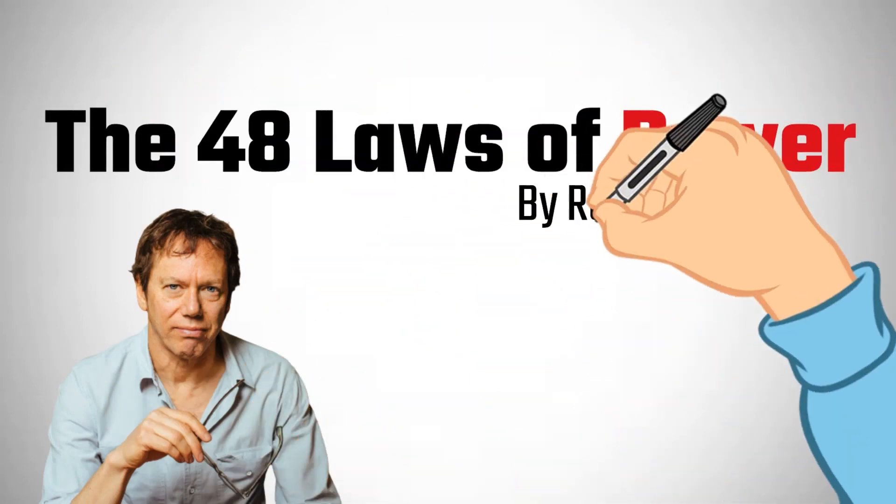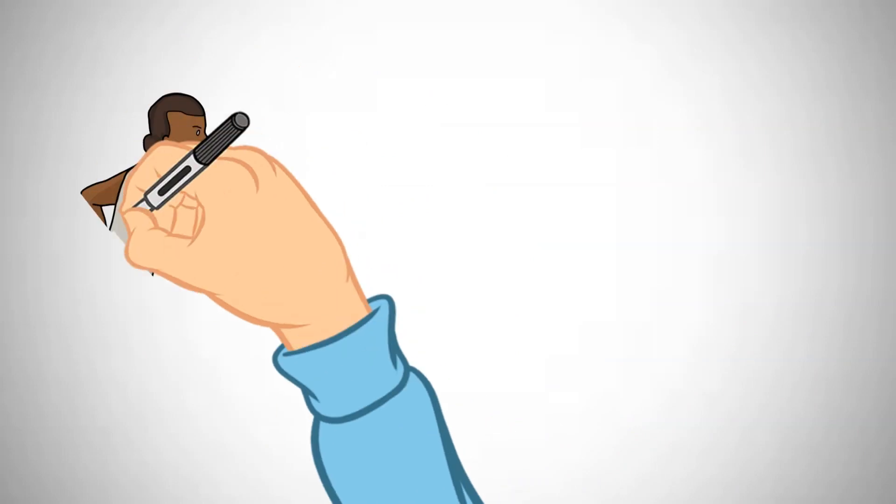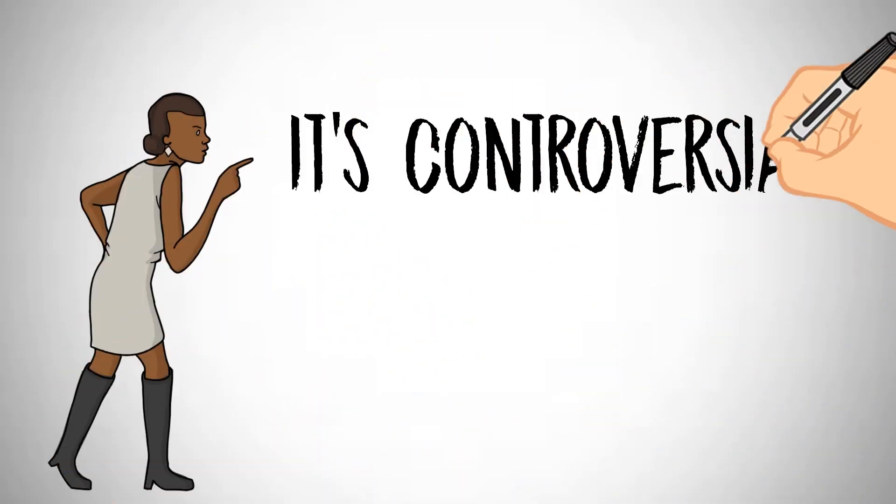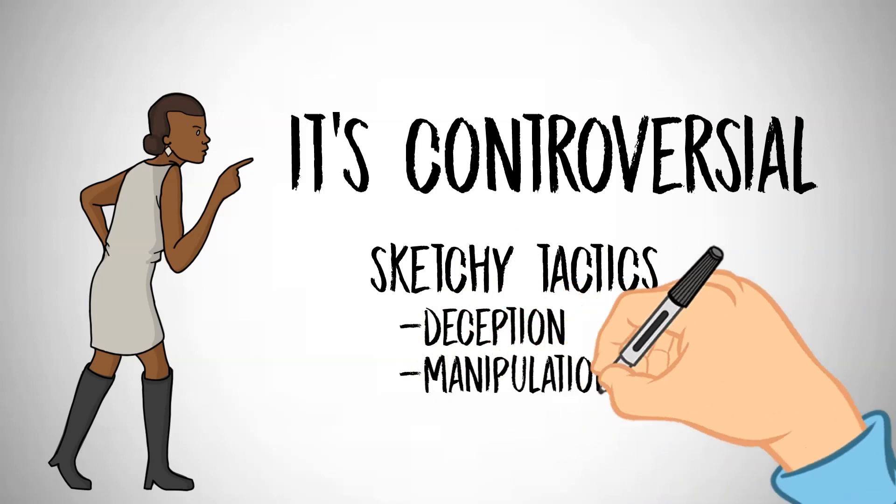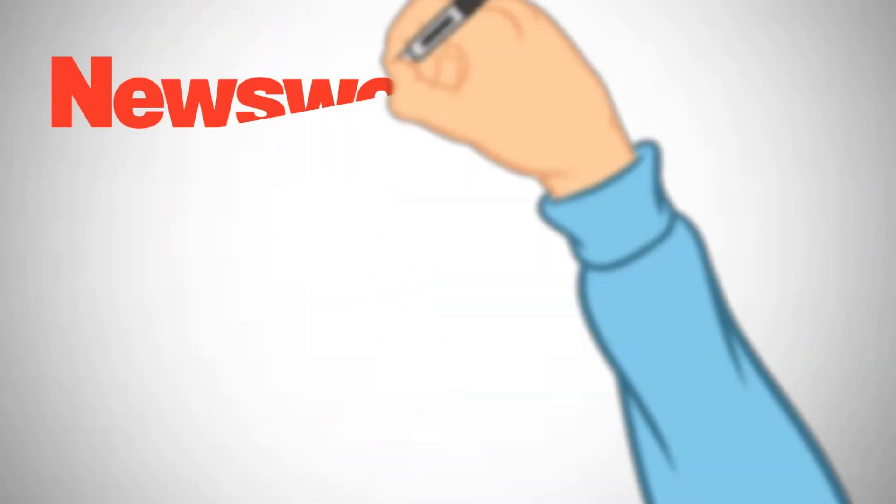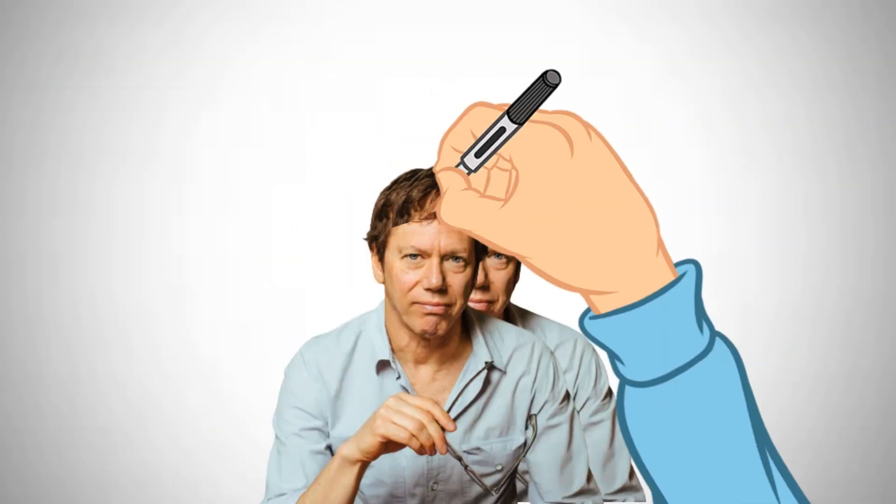So there's this book called The 48 Laws of Power by Robert Greene, and boy has it caused quite a stir. Some folks say it's controversial because it encourages sketchy tactics to gain power like deception and manipulation. Even Newsweek claimed that Greene has actually produced one of the best arguments since the New Testament for humility and obscurity.